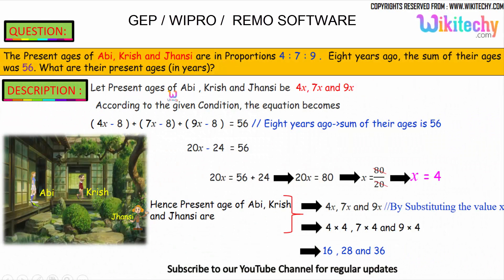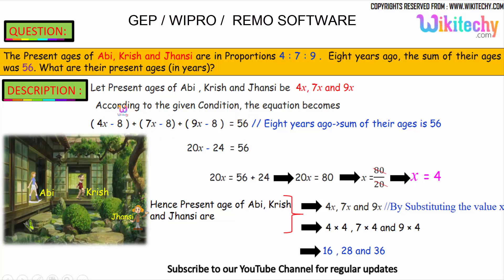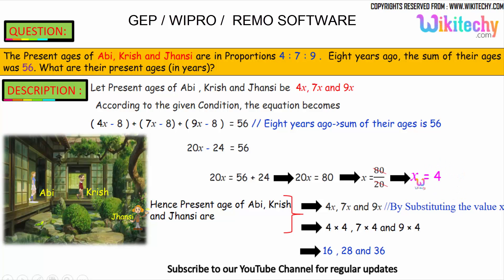The present ages of Abhi, Krish, and Jansi are in the proportion 4:7:9, so let them be 4x, 7x, and 9x. According to the given condition, 8 years ago the sum of their ages was 56, so: (4x − 8) + (7x − 8) + (9x − 8) = 56. This gives 20x − 24 = 56, so 20x = 80, and x = 4. The present ages are 4×4 = 16, 7×4 = 28, and 9×4 = 36.